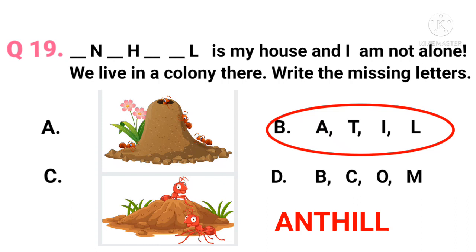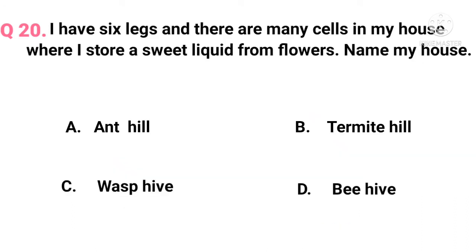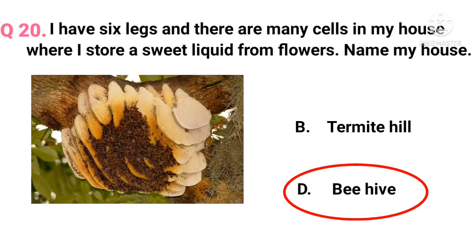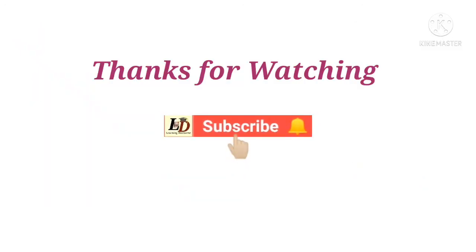Question 20. I have six legs and there are many cells in my house where I store a sweet liquid from flowers. Name my house. The answer is option D — beehive. Bees collect nectar from flowers and store it in the cells of their hive as honey. They seal the mouth of the cells with wax, so we can collect both honey and wax from the beehive.